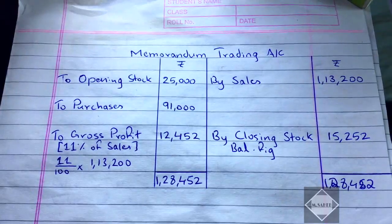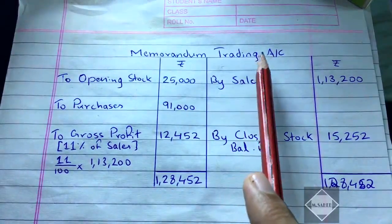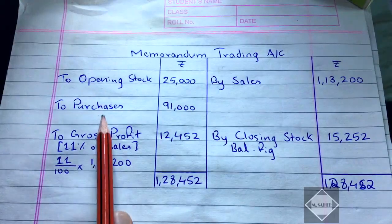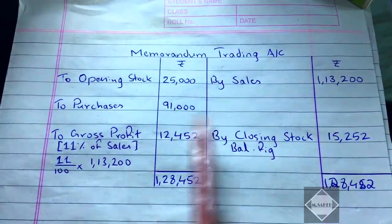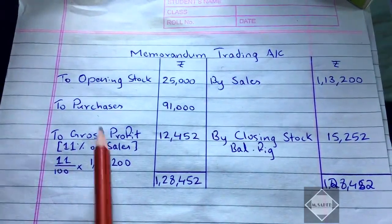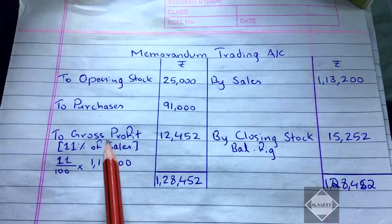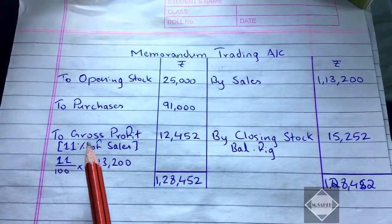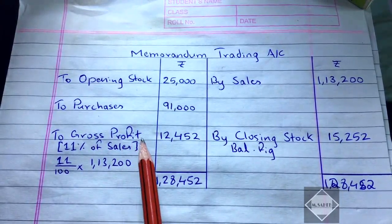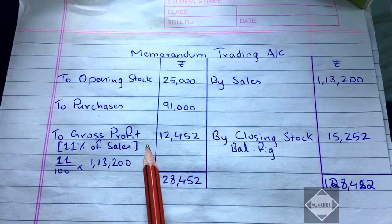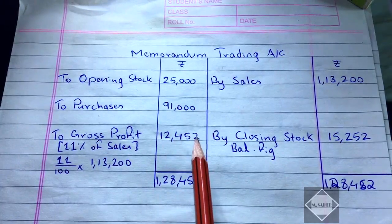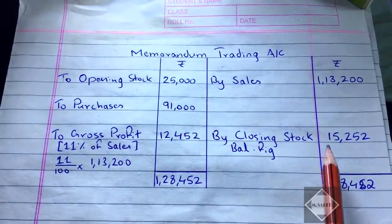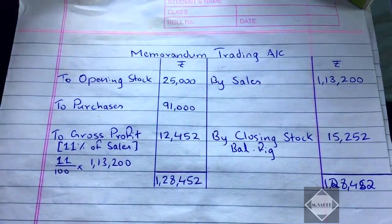We then prepared the memorandum trading account to find the closing stock on the date of fire. Opening stock, purchases, and sales were all given. Gross profit was found as 11% of sales = 12,452. As a balancing figure, the closing stock came out to 15,252.